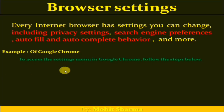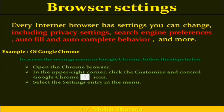Here I have taken the example of Google Chrome. To access the settings menu in Google Chrome, follow these steps: First, open Google Chrome. Second, in the upper right corner, click on the 'Customize and Control Google Chrome' icon — three vertical dots visible in the upper right corner of the browser. Click on them and you get a list of menu items. From these items, select 'Settings'.